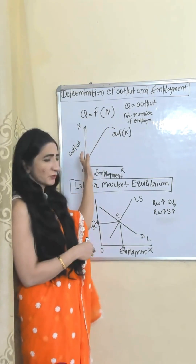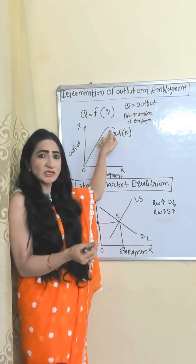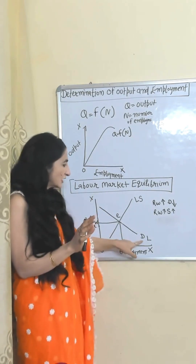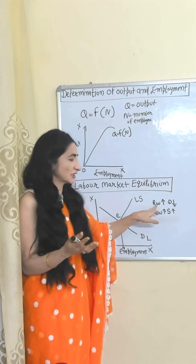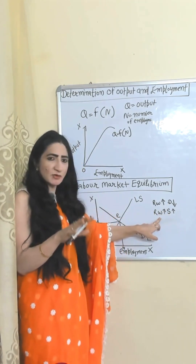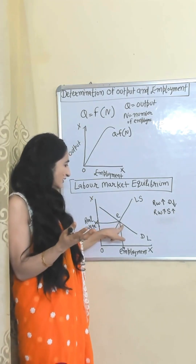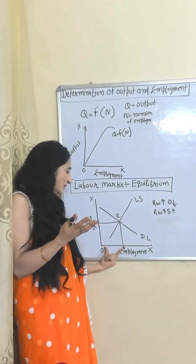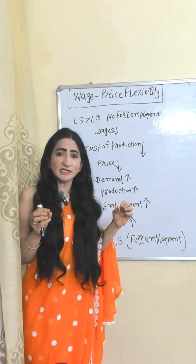After some point, output starts reducing because of diminishing returns on labor. In the labor market equilibrium, labor demand and real wage rate have an inverse relation — as real wage increases, labor demand falls. But labor supply and real wage have a positive relation — as real wage increases, labor supply also increases. At the equilibrium point, labor demand equals labor supply, giving us equilibrium employment and equilibrium wages.